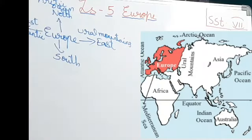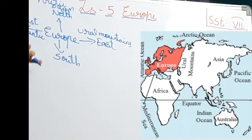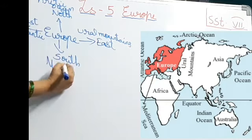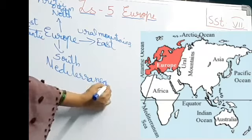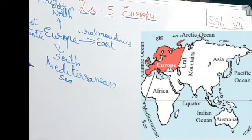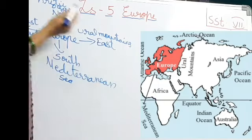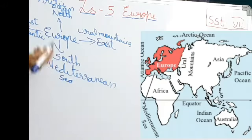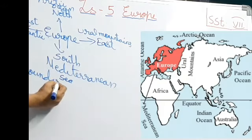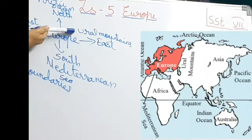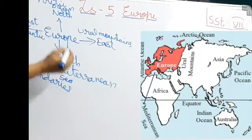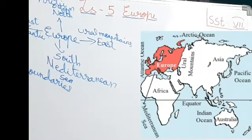I think you all have remembered. And to the south what we have? The Europeans call it the middle of the world - that is the Mediterranean Sea. To the south we have Mediterranean Sea. So this is about the location of Europe. These are all the boundaries of Europe: on the east Ural Mountains, on the west Atlantic Ocean, to the north Arctic Ocean, and to the south Mediterranean Sea.